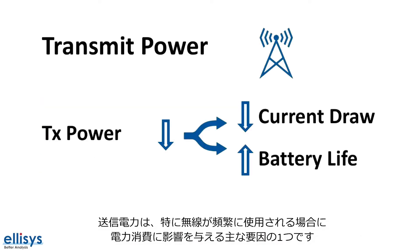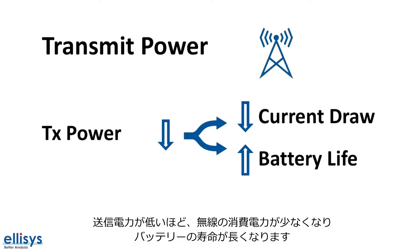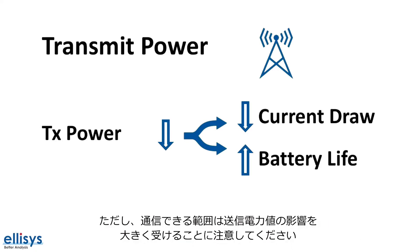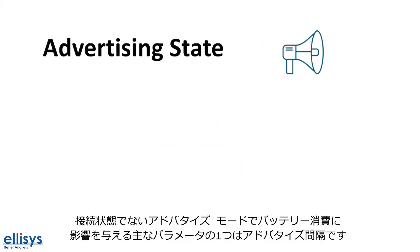Transmit power is one of the main factors affecting power consumption, especially when the radio is used a lot. The lower the transmit power, the lower the power consumption of the radio, and the longer the battery life. However, keep in mind that the range is greatly affected by the transmit power value.